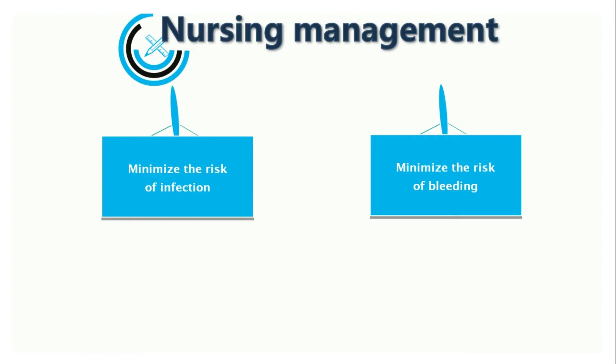To minimize the risk of bleeding, use soft toothbrush for mouth care, electric razor for shaving, keep nails short by filing. Avoid intramuscular injection and other invasive procedures. Prevent constipation by use of stool softeners as prescribed. Restrict activity based on platelet count and active bleeding. Monitor pad count for menstruating patients. Avoid use of vaginal tampons. Control bleeding by applying pressure to the site using ice packs and prescribed topical hemostatic agent.